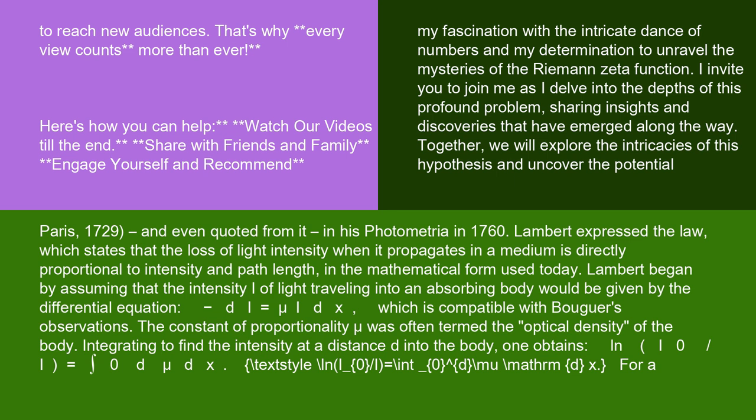and quoted from it in his Photometria in 1760. Lambert expressed the law, which states that the loss of light intensity when it propagates in a medium is directly proportional to intensity and path length, in the mathematical form used today. Lambert began by assuming that the intensity of light traveling into an absorbing body would be given by the differential equation: -dI = μI dx, which is compatible with Bouguer's observations.